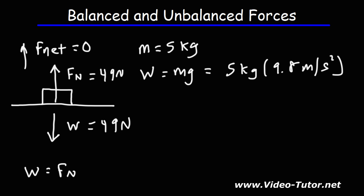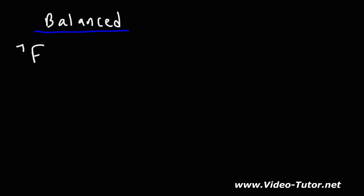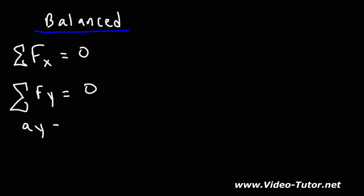When you have an unbalanced situation, there's going to be a net force, and if there's a net force that means there's going to be an acceleration, according to Newton's second law of motion — the net force equals mass times acceleration. When the forces are balanced, the sum of the forces in the x direction and in the y direction will be zero, meaning the acceleration in both the x and y directions is also zero.